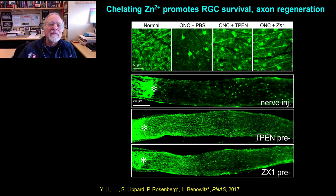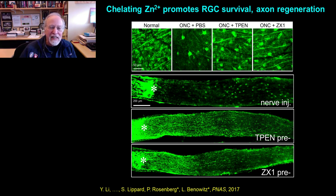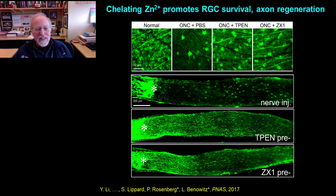We can also approach this pharmacologically using zinc chelators T-Pen and ZX1. T-Pen has extremely high affinity for zinc over calcium; ZX1, also developed in Lippard's lab, has high affinity for zinc but no affinity for calcium. Normally after optic nerve injury we lose about 80% of retinal ganglion cells by two weeks — only about 23% surviving. Either chelator strongly increases ganglion cell survival and causes extraordinary levels of axon regeneration, compared to no regeneration in untreated controls.